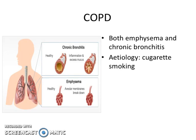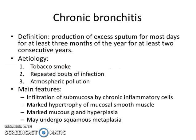Next is chronic obstructive pulmonary disease, which is composed of both emphysema and chronic bronchitis, with cigarette smoking as the etiology. Chronic bronchitis is defined by production of excess sputum for most days for at least three months of the year for at least two consecutive years. The etiology includes tobacco smoke, repeated bouts of infection, and atmospheric pollution. Main features are infiltration of submucosa by chronic inflammatory cells, marked hypertrophy of mucosal smooth muscle, marked mucus gland hyperplasia, and squamous metaplasia.